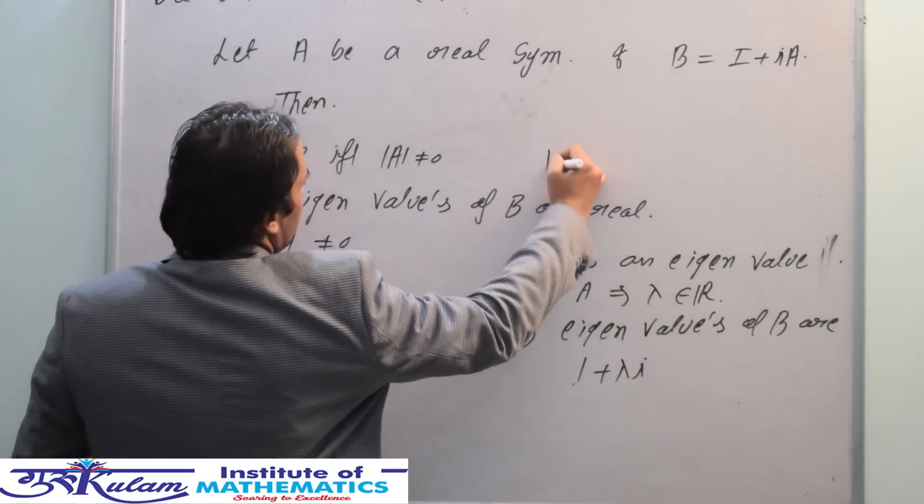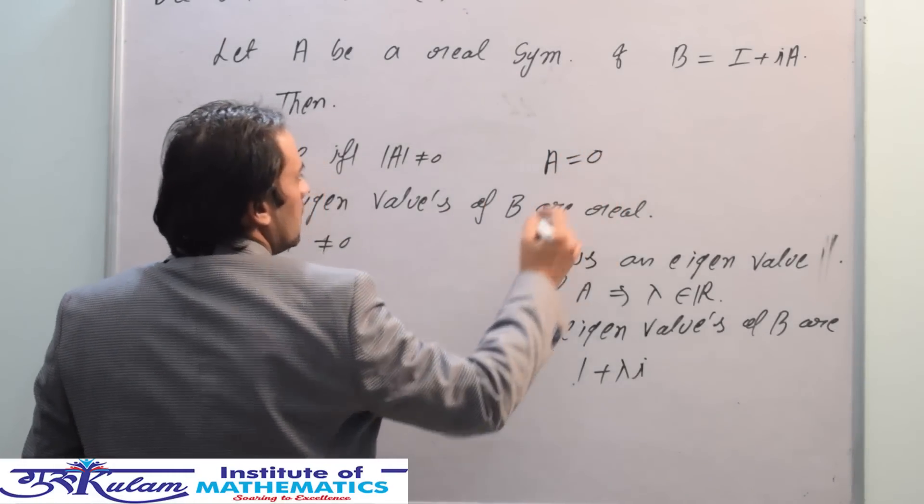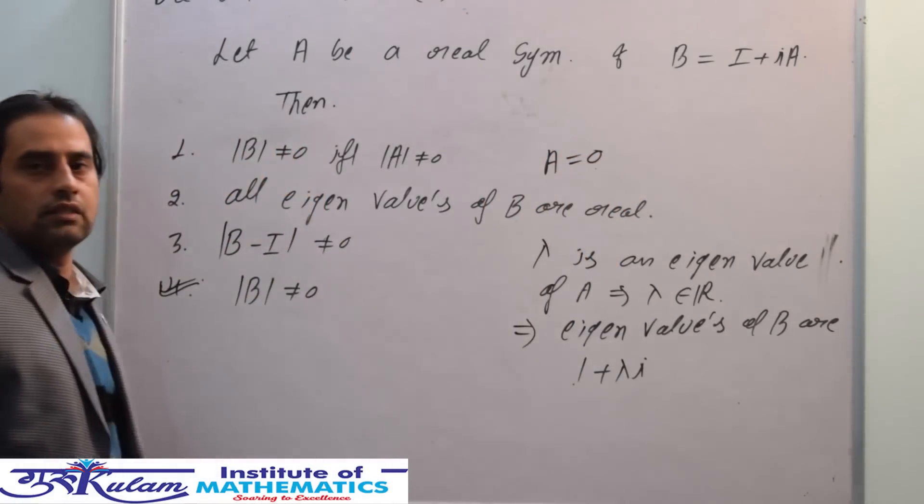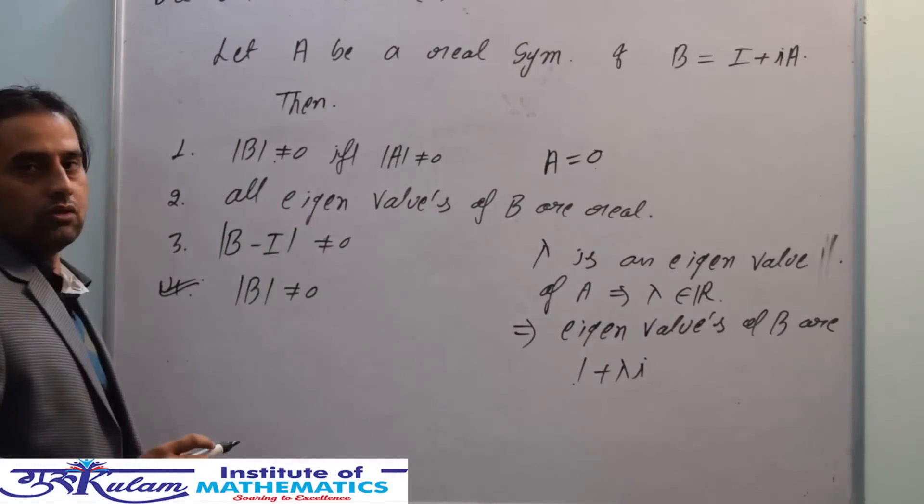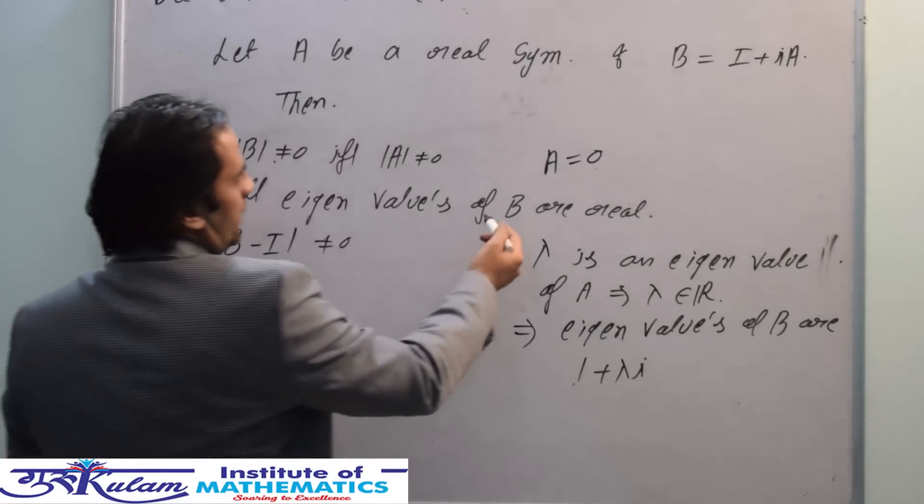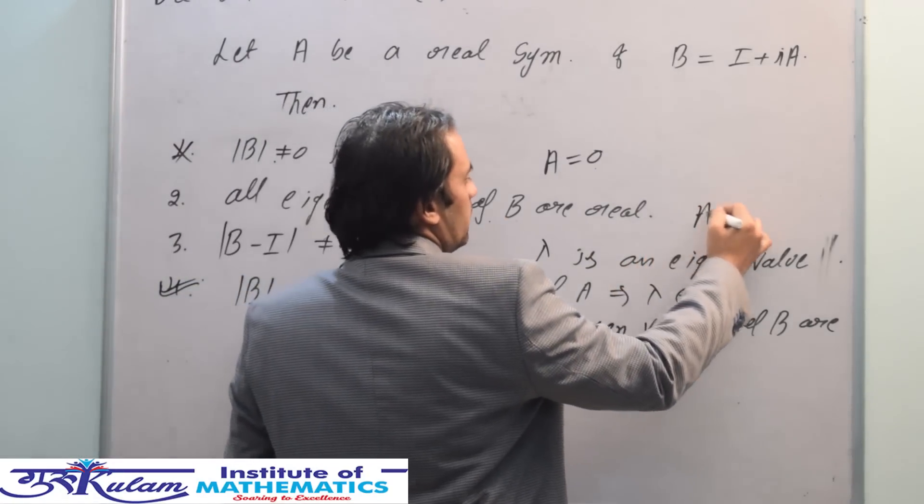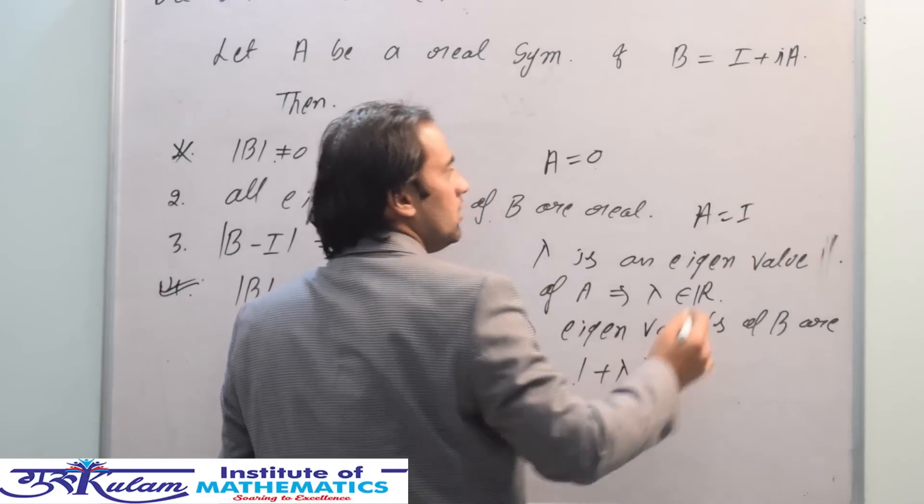Now for options 1, 2, and 3, we use counterexamples. If A equals zero matrix, determinant of A is zero but determinant of B is non-zero, so option 1 is incorrect. If A equals the identity matrix, the eigenvalues of B are not real, so option 2 is incorrect.